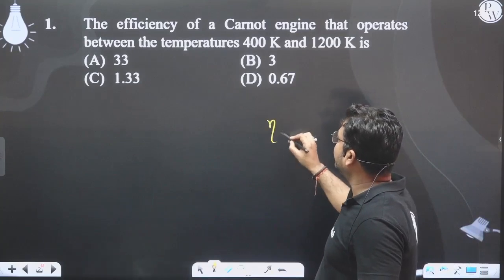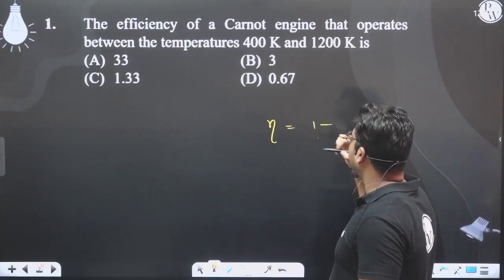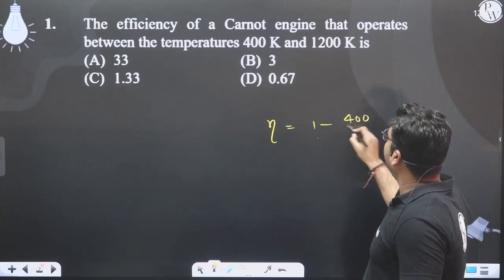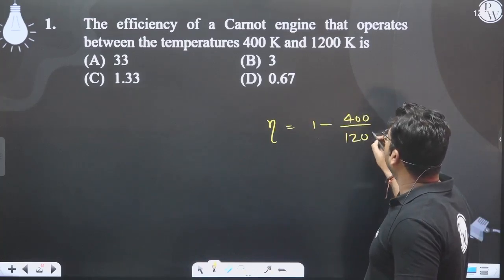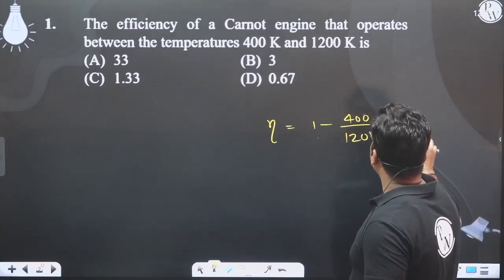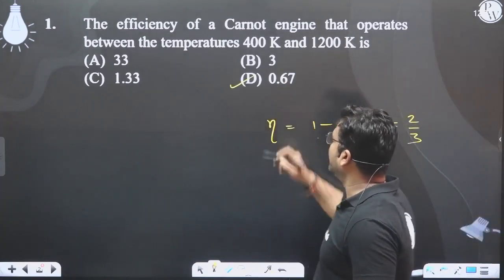Dekhiye, efficiency ka humara simple formula hota hai, 1 minus lower temperature divided by higher temperature. Aur ye aajayega 1 minus 1 by 3 that is 2 by 3, correct answer hooga 2 by 3 which is exactly equal to D.